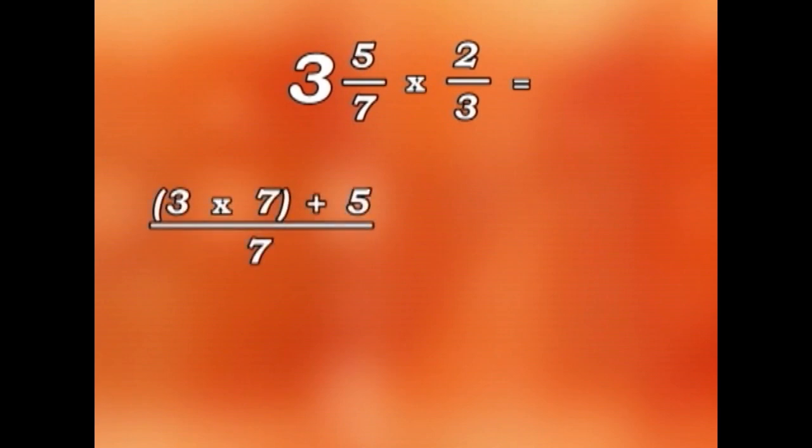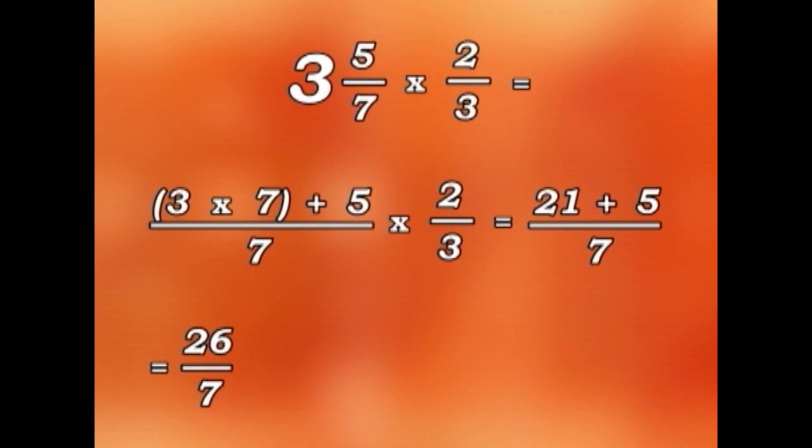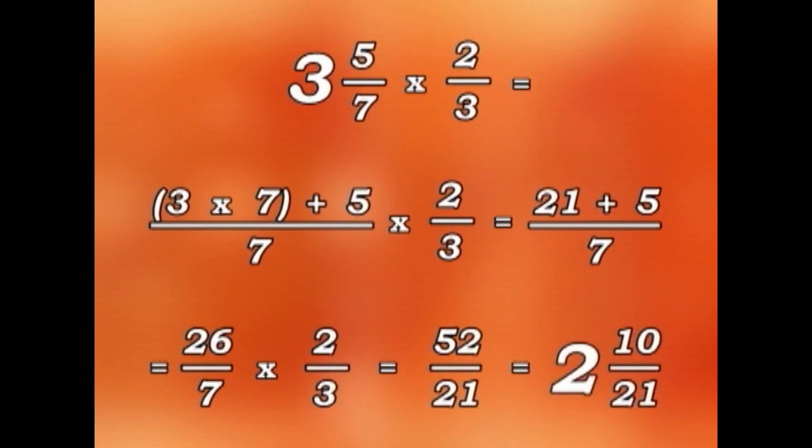That's 3 times 7 plus 5 over 7 multiplied by 2 over 3. Well, 3 times 7 is 21 plus 5 is 26 over 7 multiplied by 2 over 3, which makes 52 over 21. Or, as a mixed number, 2 and 10 twenty-firsts.